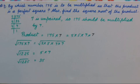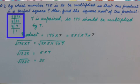First of all we will see the first part. In the first part we have to find a number by which we multiply 175 so that it will be a perfect square. For that first of all we should prime factorize it. Prime factors of 175 are 5 into 5 into 7.